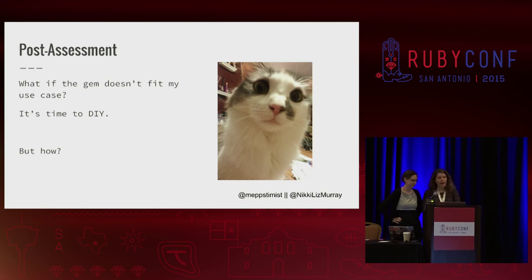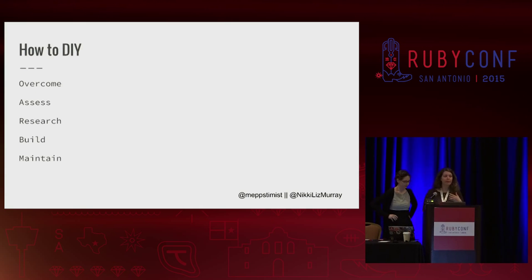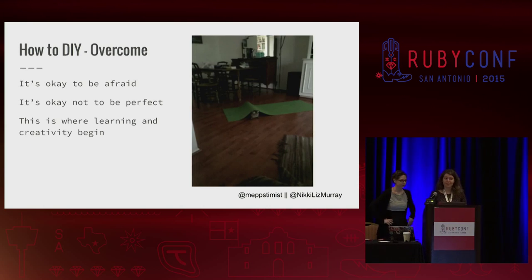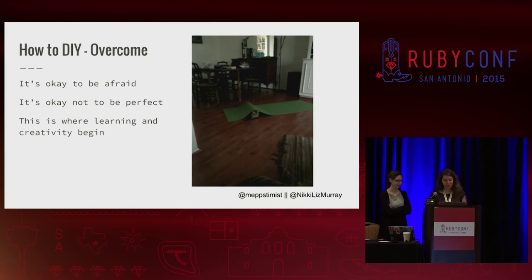If you're done assessing and none of the gems out there really fit what you're trying to do, it's time to do it yourself. Since we're programmers, I think we all like a method. This is what I came up with — I call it OCARB: Overcome, Assess, Research, Build, and Maintain. We're going to do this in the workflow that fits your company. I put in Overcome because every time I'm approaching a project, I have to tell myself it's okay that I'm really freaked out by what I'm about to approach, that my solution might not be perfect, but I can come up with something good for the problem at hand.